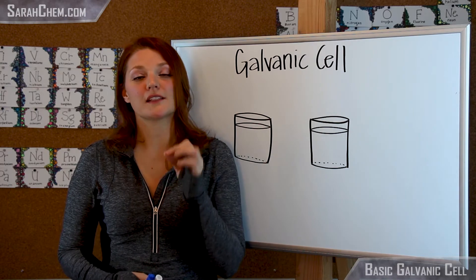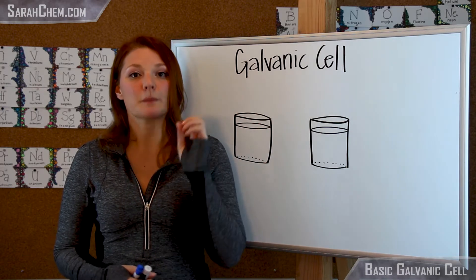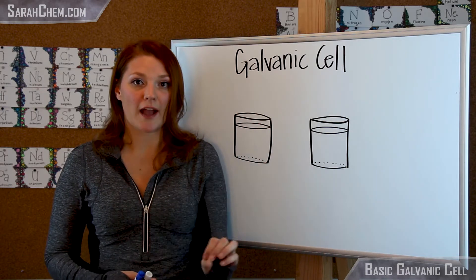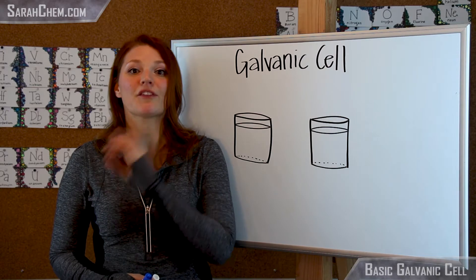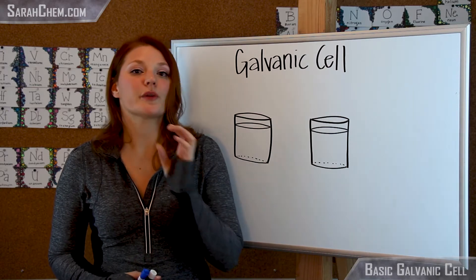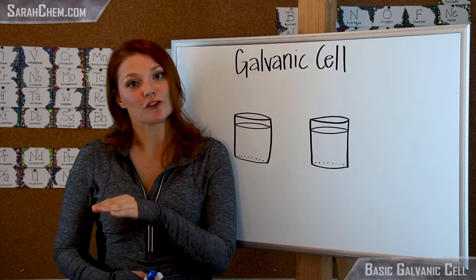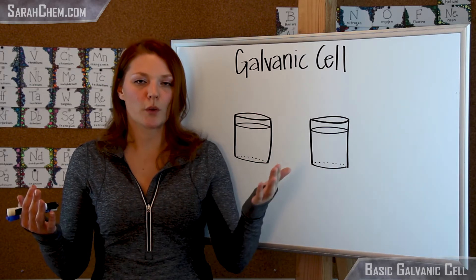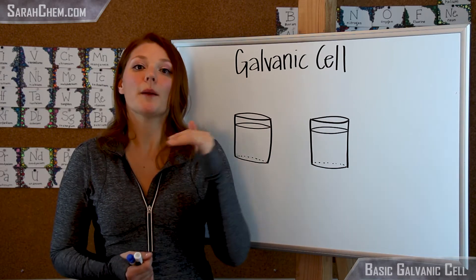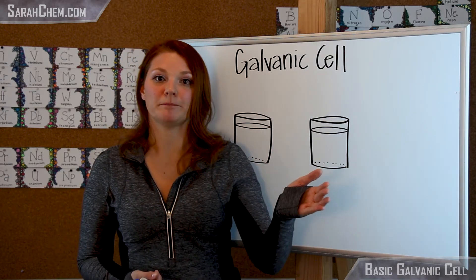Another important point about these types of cells is that they run on spontaneous reactions. The reaction has to be favorable, meaning it has to have either a negative Gibbs free energy associated with it, or equivalently, a positive voltage associated with it.